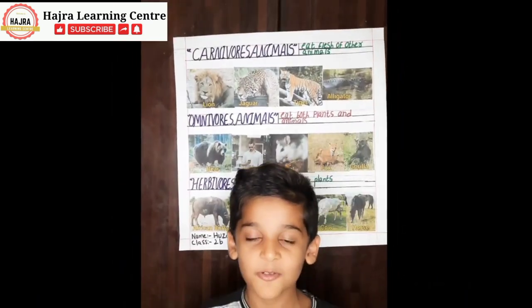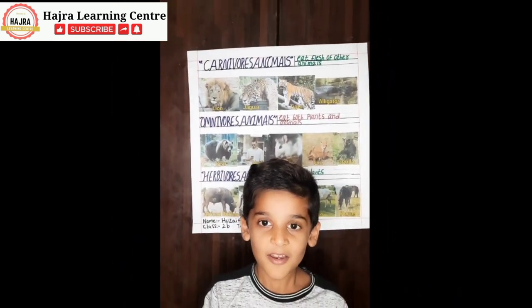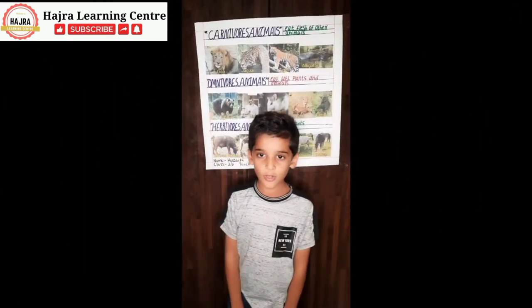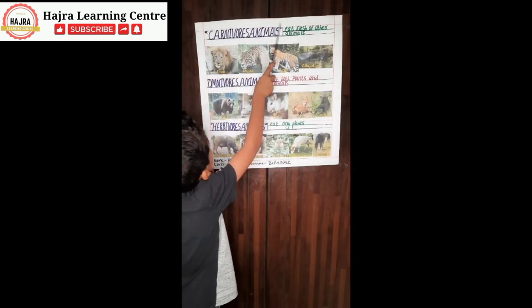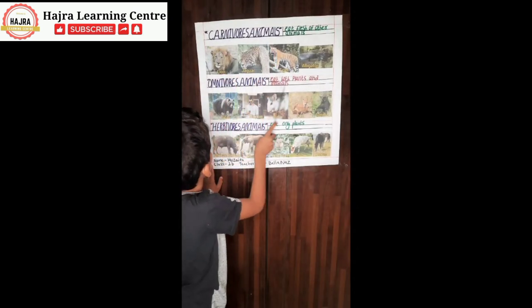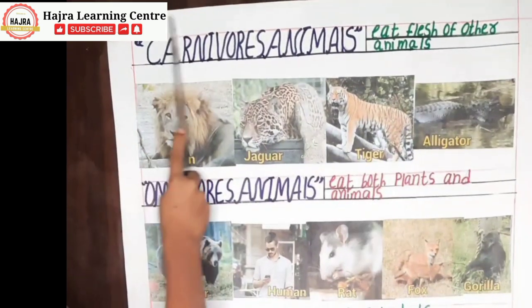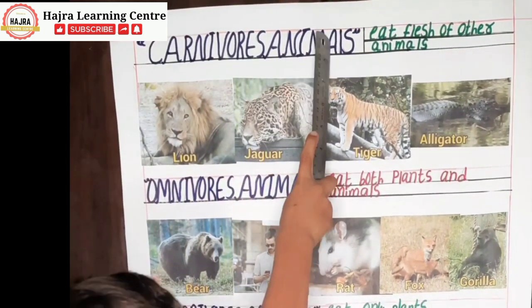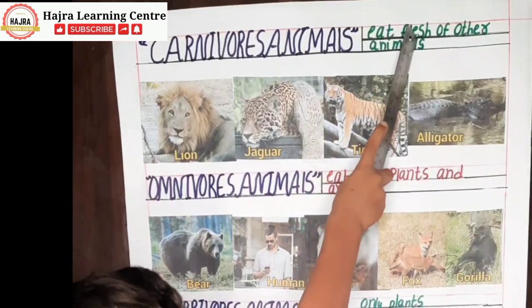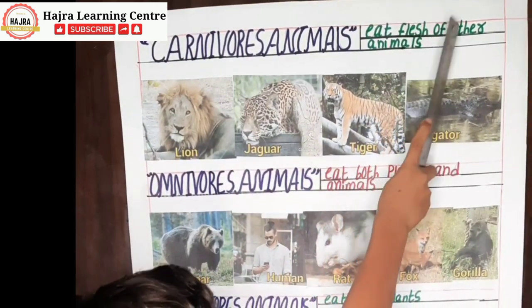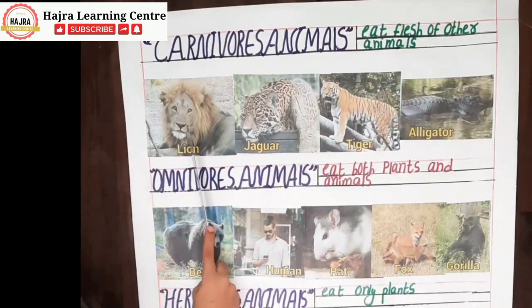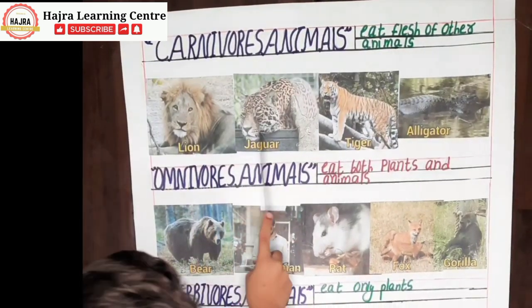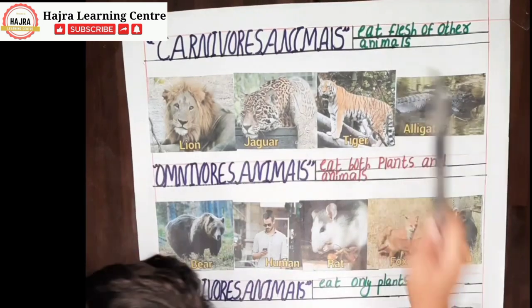Assalamu alaikum, friends. My name is Josefa. I am going to tell you three types of animals: carnivores, omnivores, herbivores. Carnivores are animals that eat the flesh of other animals. For example, lion, jaguar, tiger, alligator.